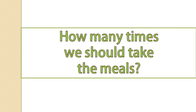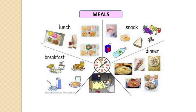The question arises: how many times should we take a meal? We should take at least three main meals in a day, that is breakfast, lunch and dinner. But between two meals, we can take small meals that are known as snacks.